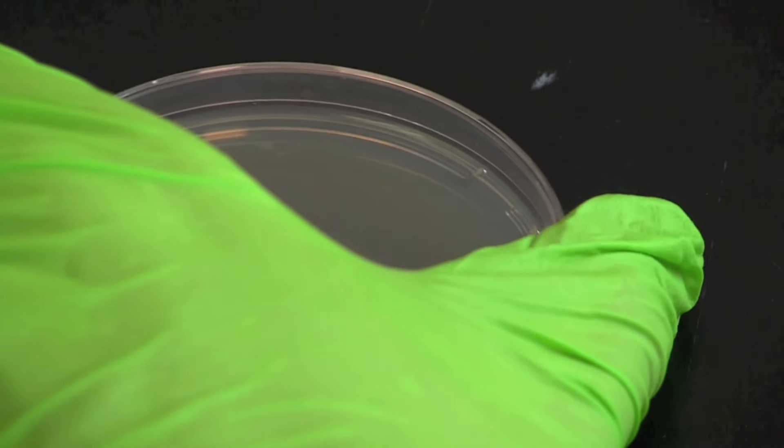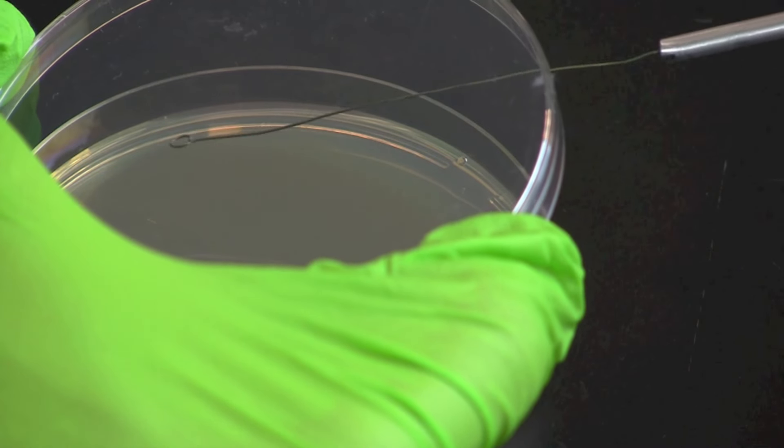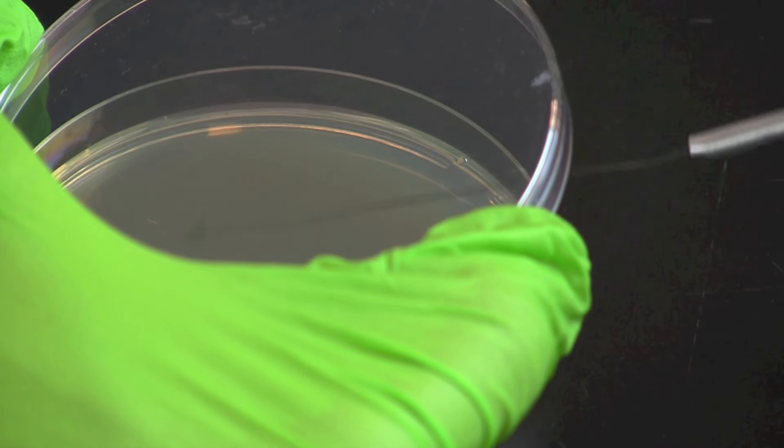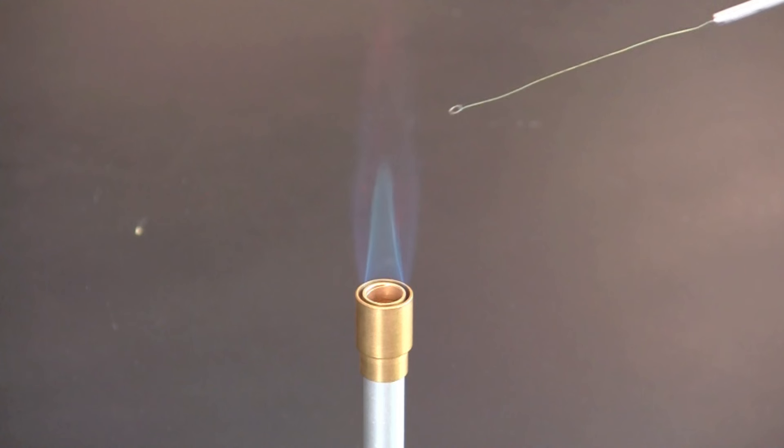Repeat the process one final time in the fourth quadrant. Flame the loop after completing the streak plating.